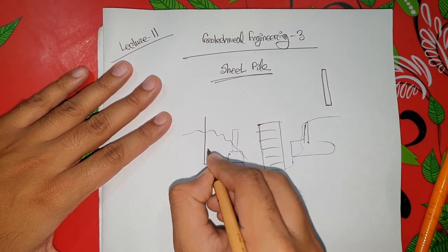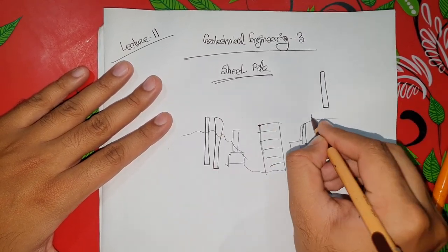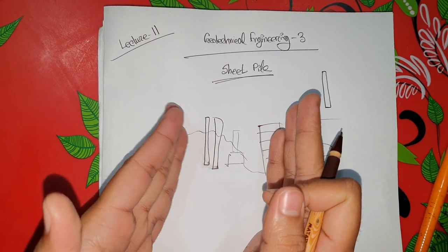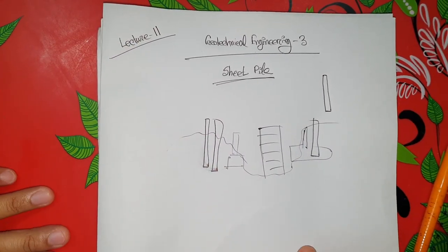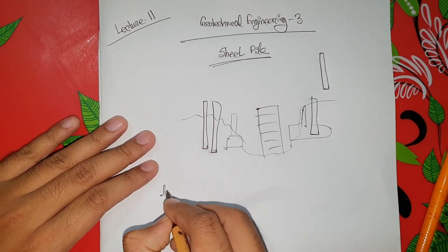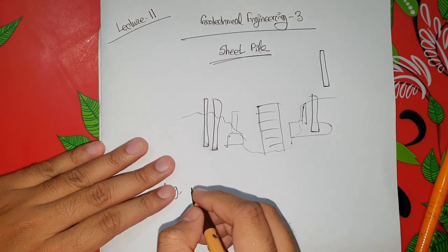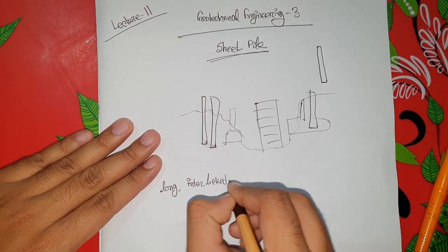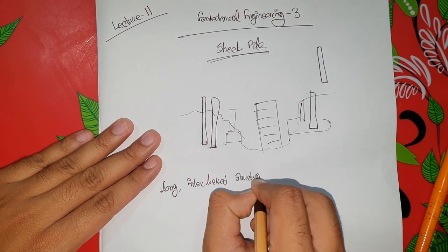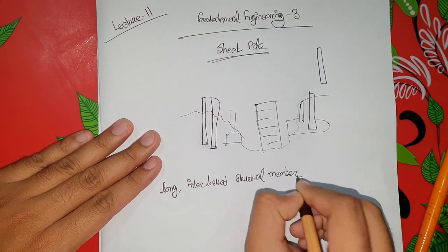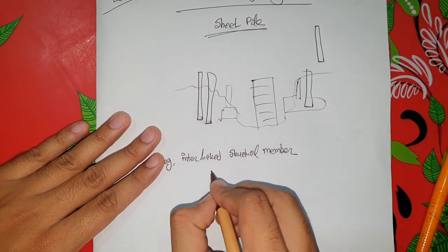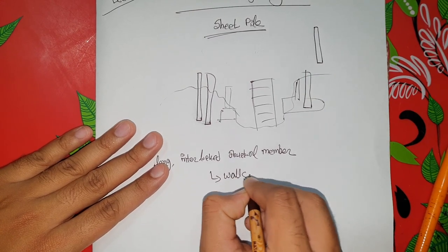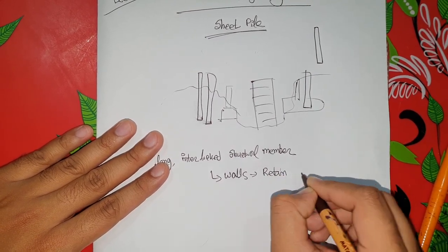If we prepare this pile of sheet like this, we need to work on the wall. The sheets are long. They are used as the interlock structure — remember, interlock structure — creating a continuous wall, a retaining wall.